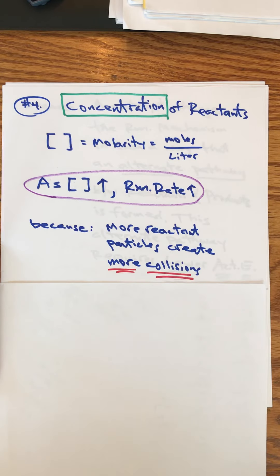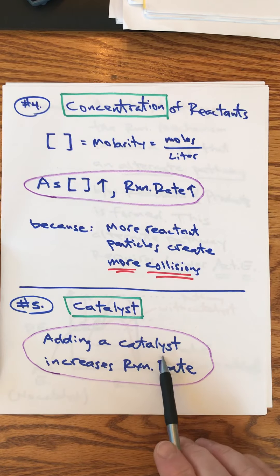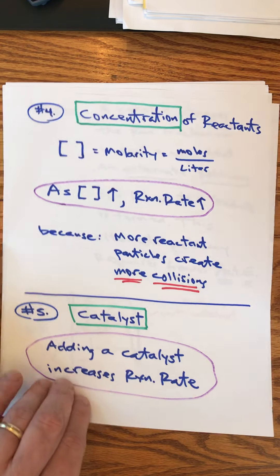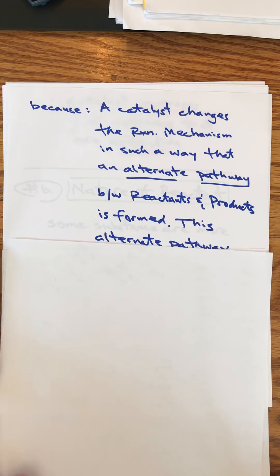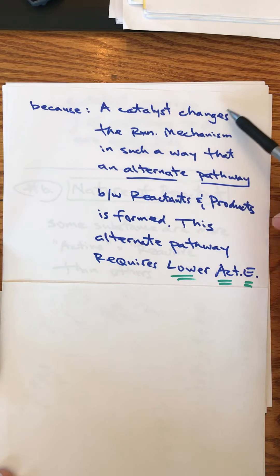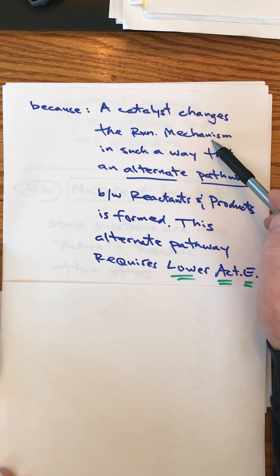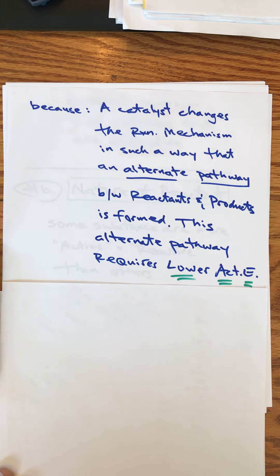Number five: add a catalyst. If you add a catalyst you increase the rate of a reaction because, and here's the important one - this is even spelled out pretty clearly in the Regents stuff - a catalyst changes the reaction mechanism in such a way that an alternate pathway between reactants and products is formed.